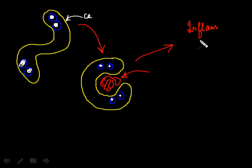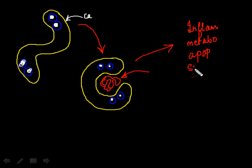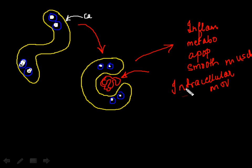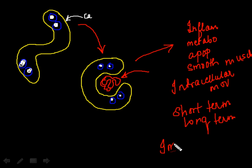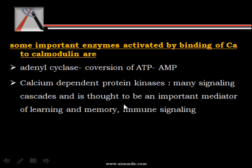Calmodulin mediates many crucial processes such as inflammation, metabolism, apoptosis, smooth muscle contraction, intracellular movements, short-term and long-term memory, and immune response.